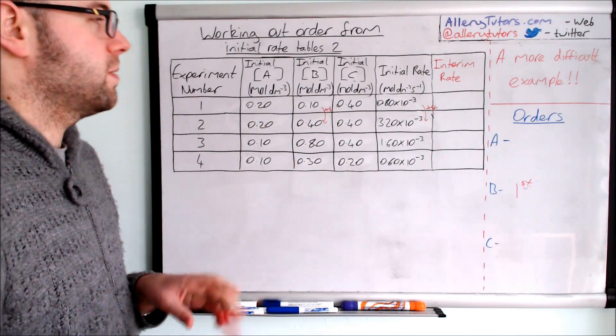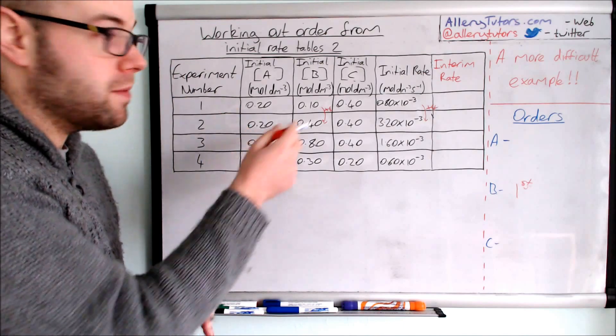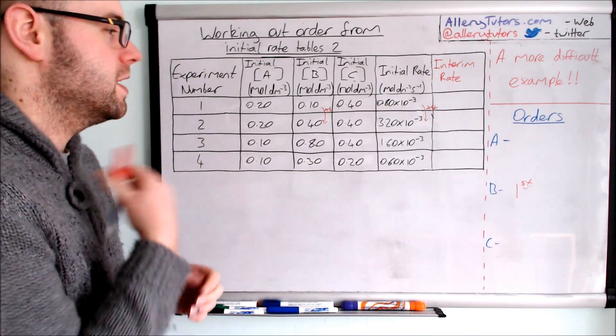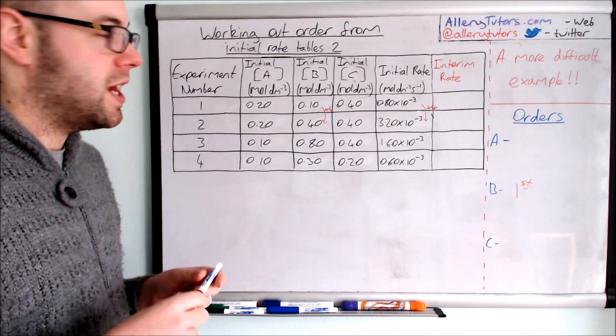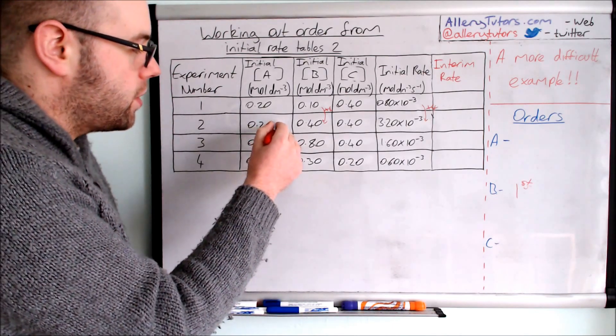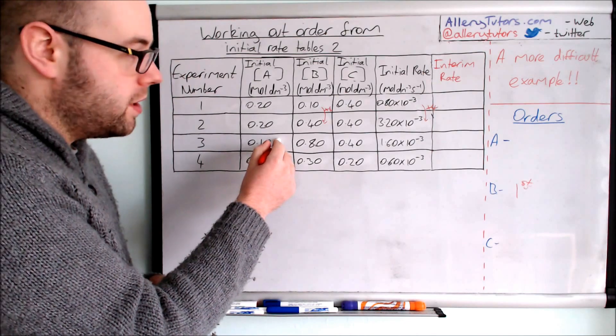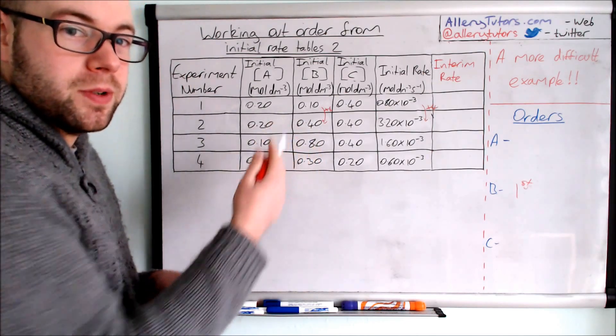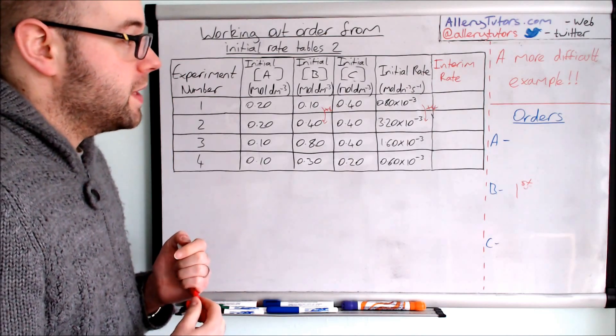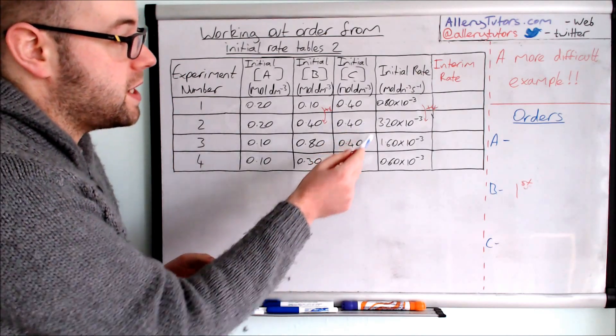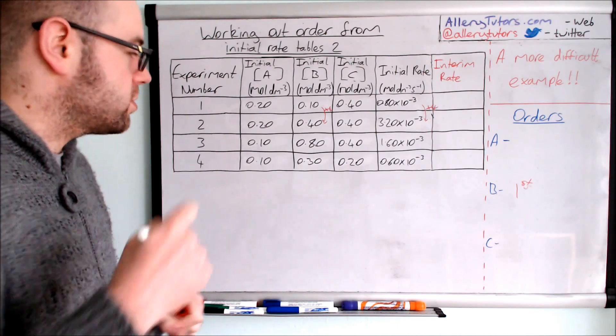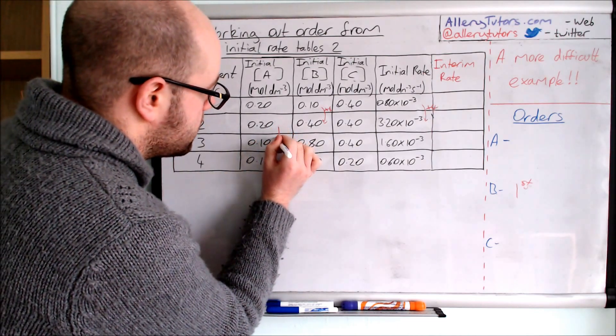Let's come back to A. Now we know the order for B, we can now work out other things effectively. We're looking for a change in A. We have a change in A here. We've got 0.2 to 0.1. We do have a change in B, but that's not so much of a problem because we know what effect B has on the reaction. We've just worked it out before. C is also constant and that's important because we don't know C yet. So we're going to use experiments 2 and 3.